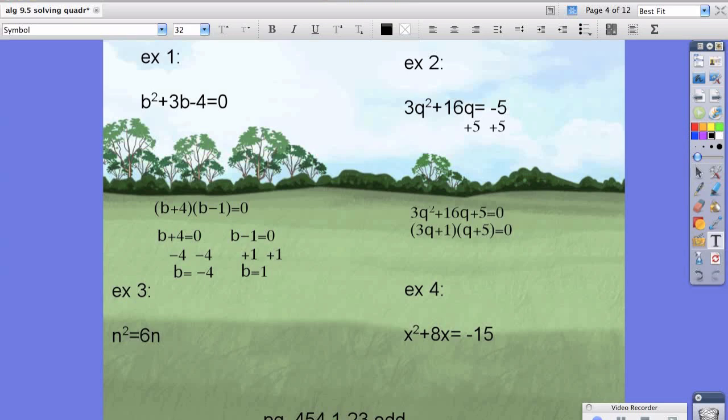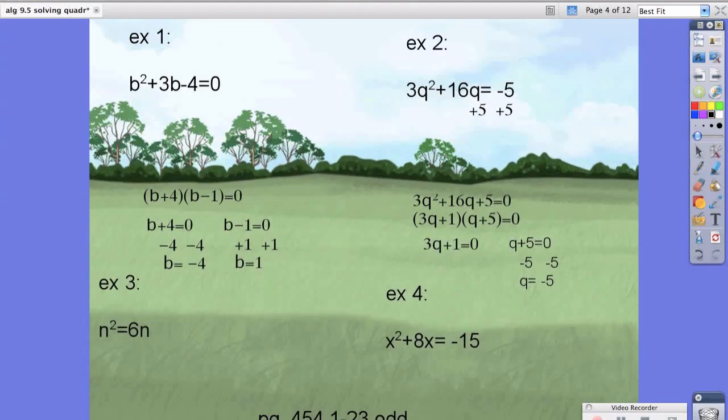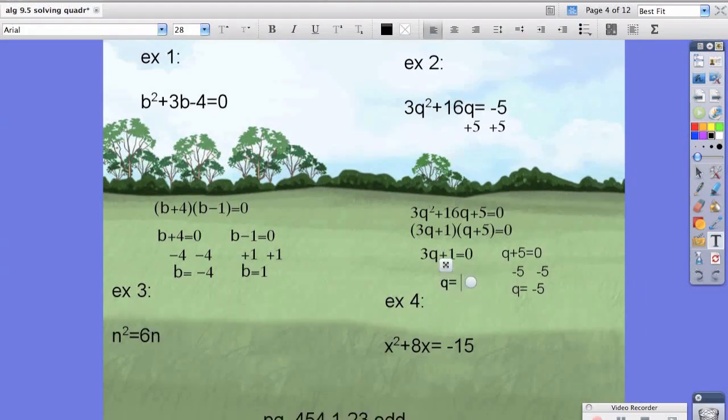From here, we use zero product property and say that each one is equal to zero. So 3q plus 1 equals 0, and q plus 5 equals 0. When we solve this first one, we're going to subtract 5 from both sides. We're left with q equals negative 5. And for the one on the left, we're going to subtract 1 and divide by 3 on both sides, and we would get q equals negative 1 third.